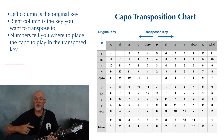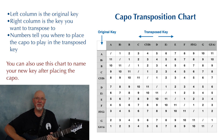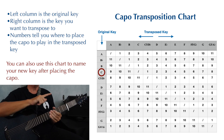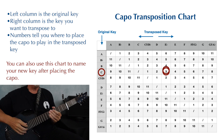You can also use this chart to identify the new key after you've placed the capo. For example, if your original key is C and you've placed a capo at the third fret, you are now in the key of E flat.